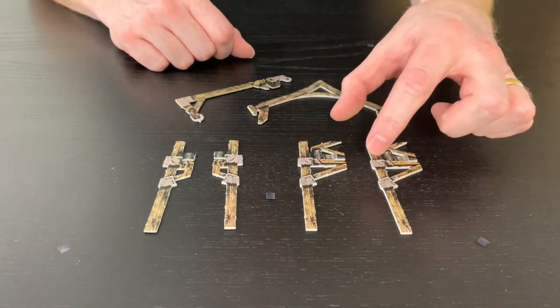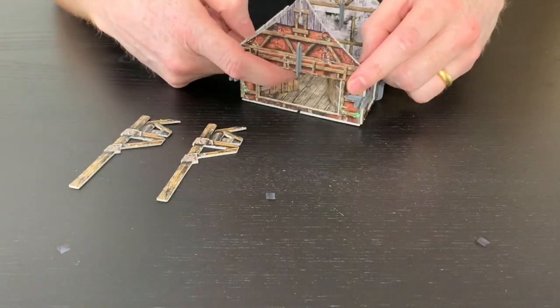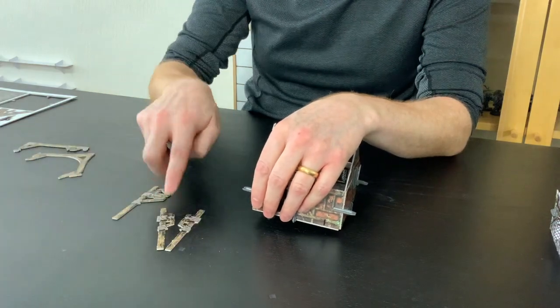So the first thing we're going to do is take the two larger, fatter, if you like, wider struts, and we're going to pop those on the front of the building where the barn door is, and we're going to place these ones at the back.